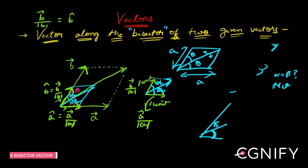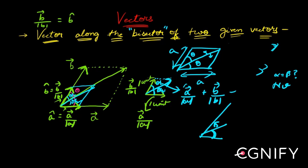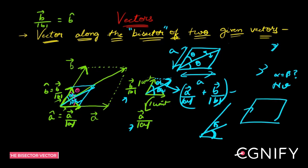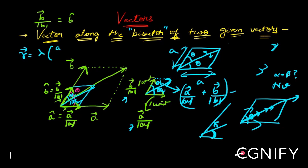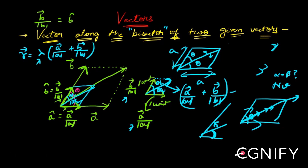So this new vector has the formula ā/|a| + b̄/|b|, which is the resultant of the two unit vectors. But I just need a vector which bisects the angle — it can be any length. That means the bisector vector can be lambda times (ā/|a| + b̄/|b|), where lambda can be any real number.